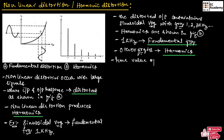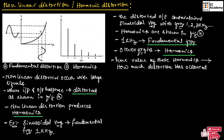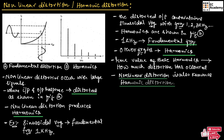The RMS value of these harmonics will tell us how much distortion has occurred. That's why non-linear distortion is also known as harmonic distortion.